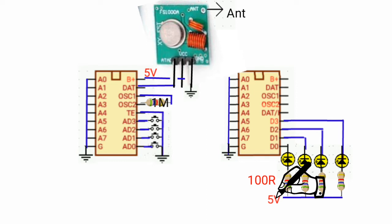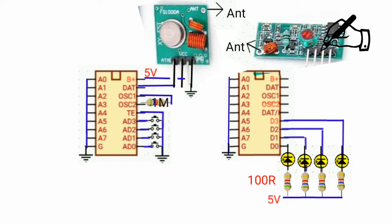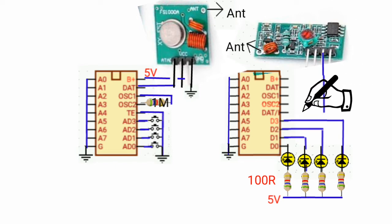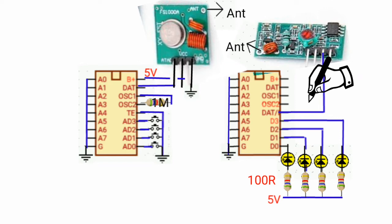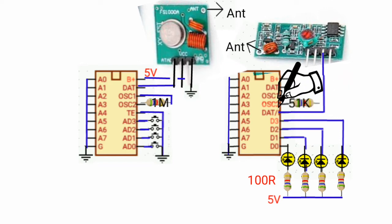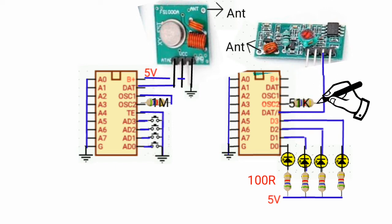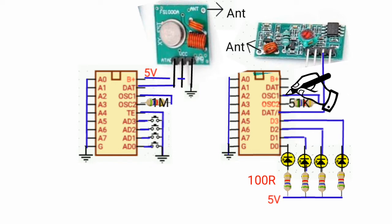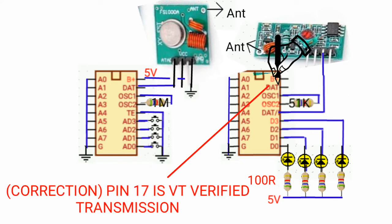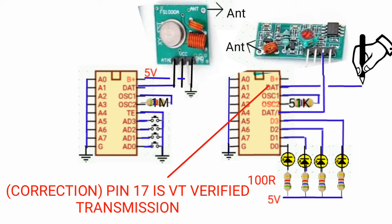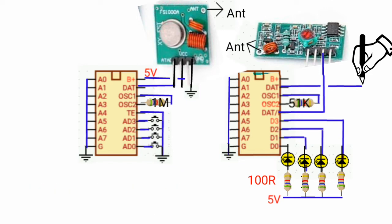Connect the data out from the receiver to pin 14 of the decoding IC. Then connect a 51K resistor from oscillator 2, with the opposite side connected to oscillator 1. Connect VT — the valid transmission pin at pin 17 — to a 100 ohm resistor.